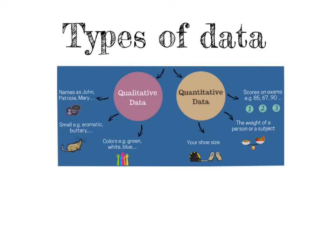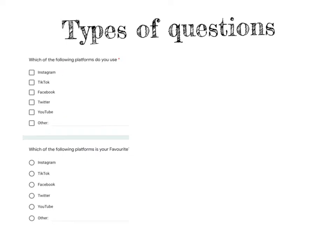Let's look at some types of questions you could be asking in a survey. If we ask which of the following platforms do you use, people can tick multiple options. When you have multiple options you can show this in a bar graph, but you cannot show this in a pie chart because people are choosing more than one option. If you add all of it together you will get a total that's bigger than the number of people that you asked.